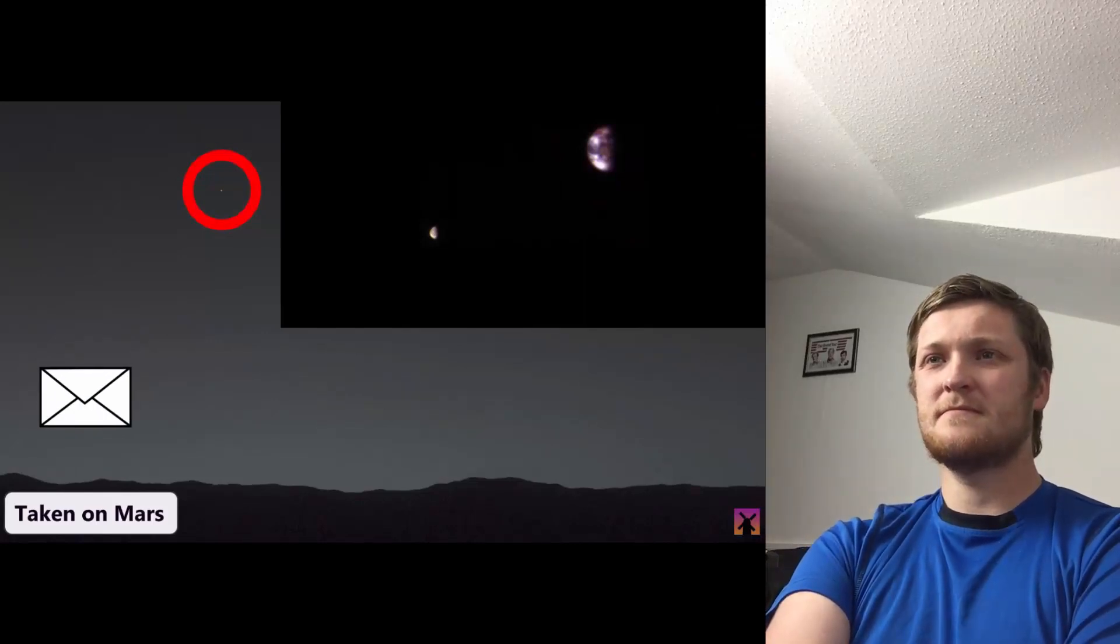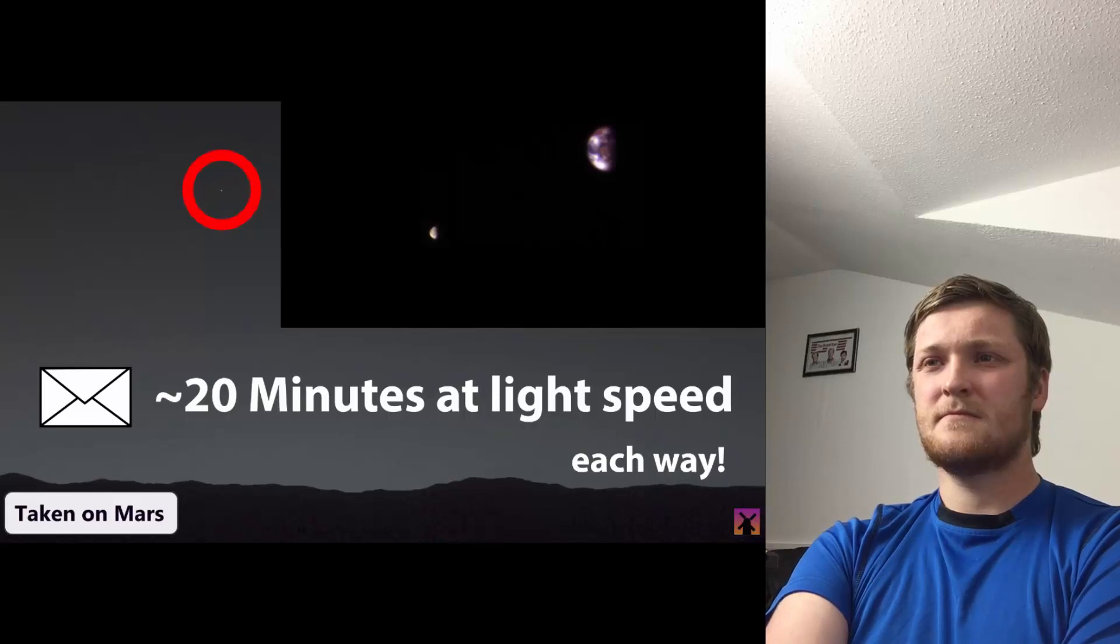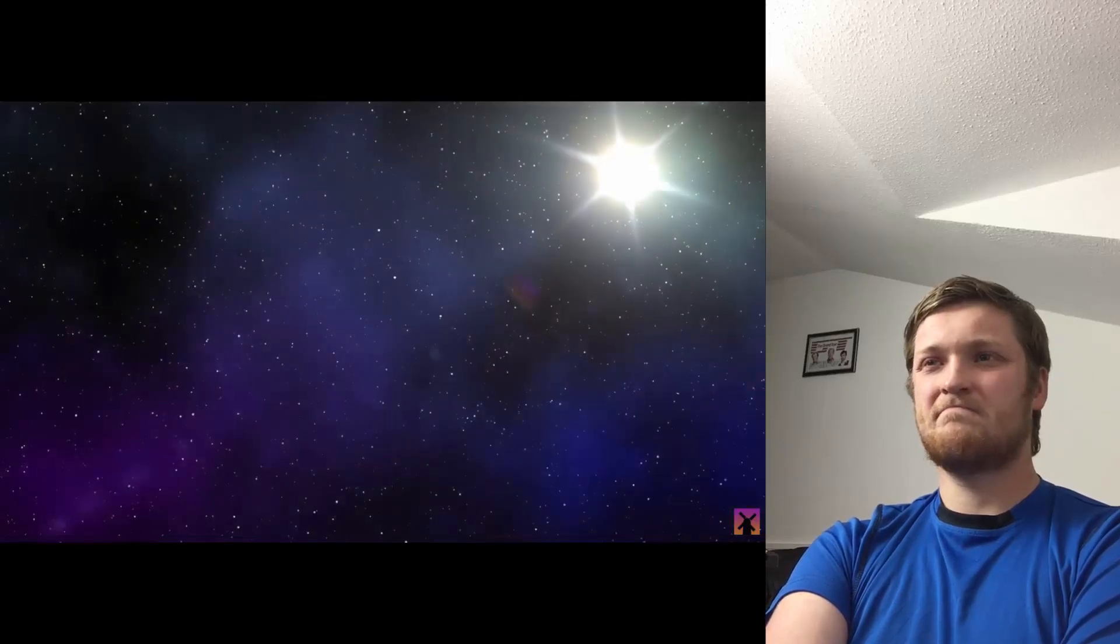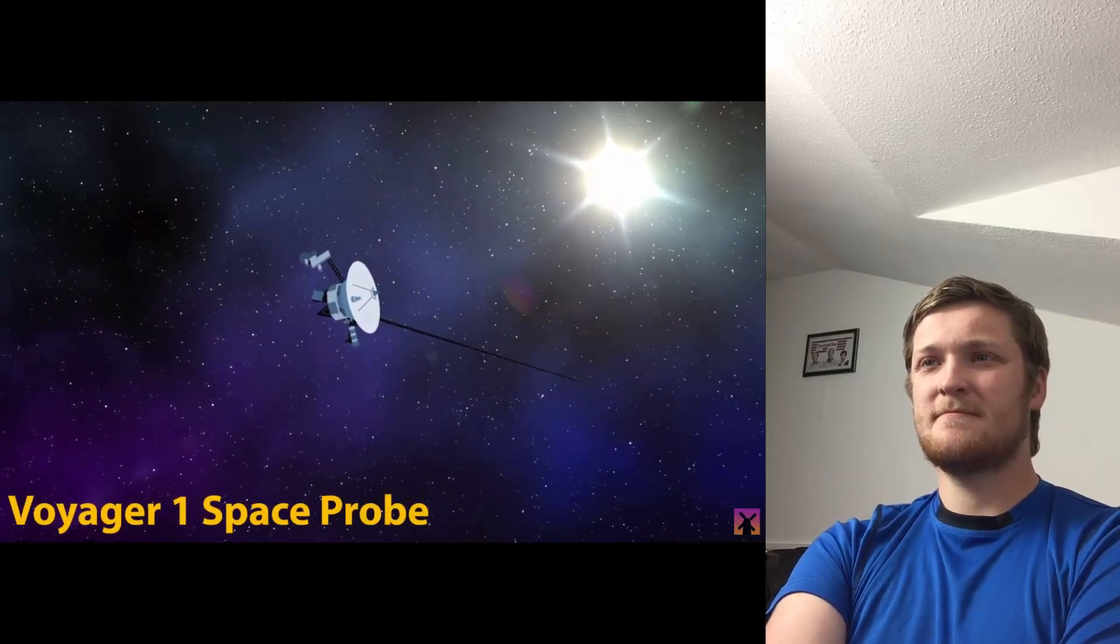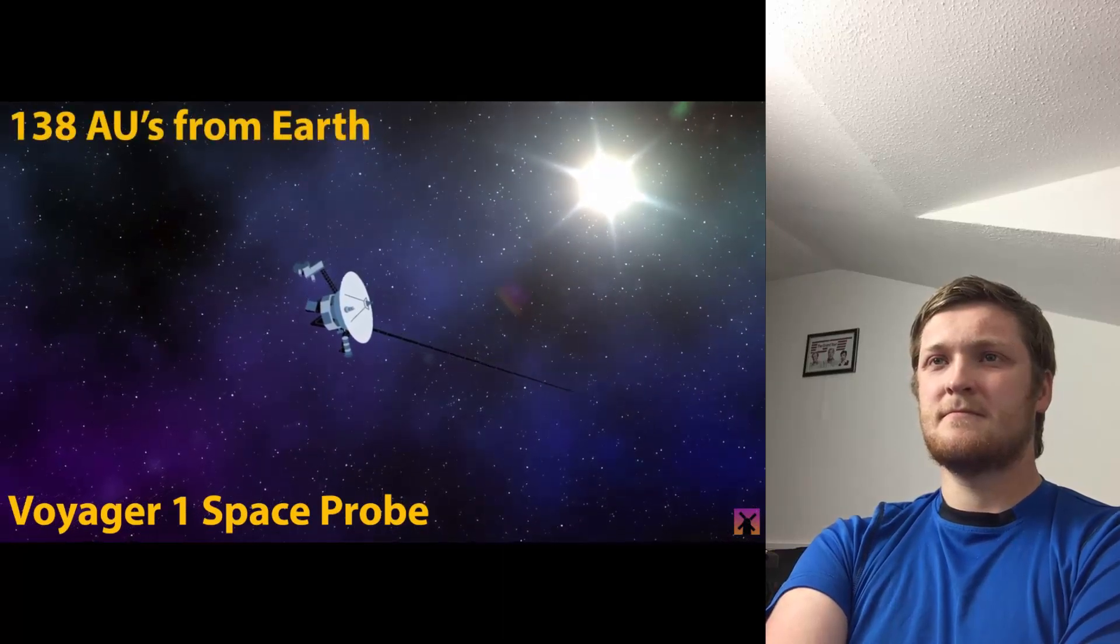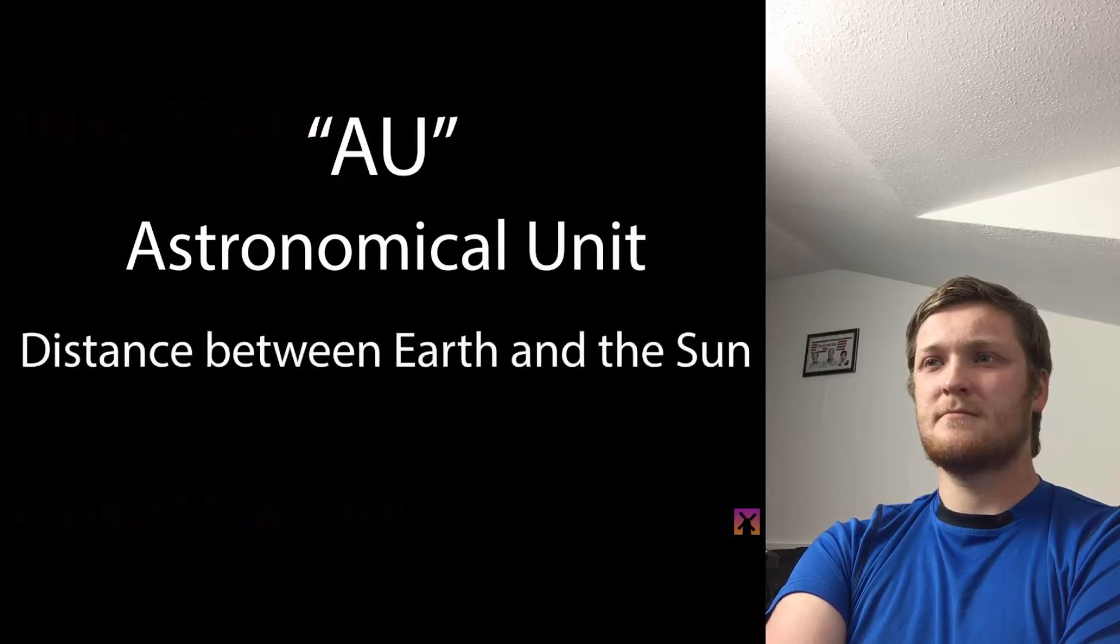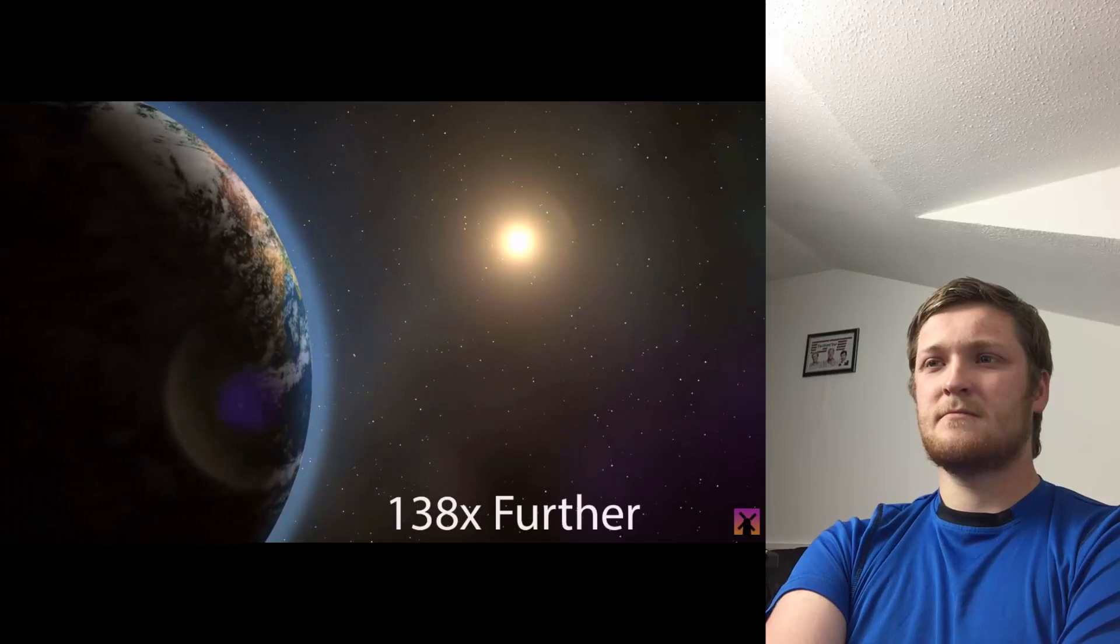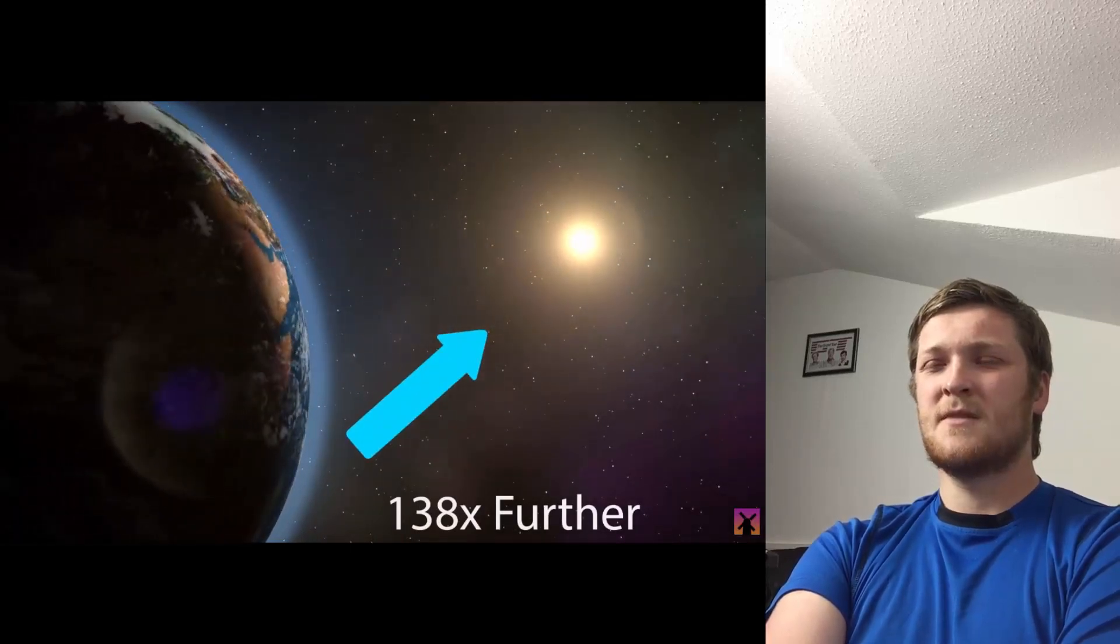Communication delay isn't just two and a half seconds, it's actually more like 20 minutes each direction, which would render instant communication in the event of an emergency impossible. When we zoom out even further, we can find the Voyager 1 space probe, the furthest man-made object from Earth. It's currently located 138 AUs from Earth, AU meaning astronomical unit, which is the distance between Earth and the Sun, which means Voyager 1 is 138 times further away from us than the Sun is.